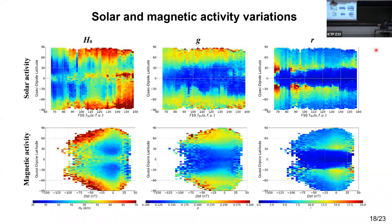Regarding solar and magnetic activity variations: H0 is positively correlated with solar activity as a function of the 81-day F10.7 index, while G does not show a very strong solar activity variation, only at very high latitudes. The R parameter again shows the strange behavior we are trying to solve. Regarding magnetic activity, for very disturbed conditions our data are very limited, so this is a work in progress. We are mainly interested in the spatial and solar activity variations because they are the variations described by the NeQuick model, while magnetic activity is currently not included.